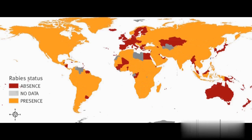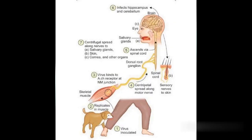Thereafter, the virus spreads to the periphery and salivary glands. From the view of diagnosis and therapeutic opportunities, we need to know that rabies does not cause cytotoxicity. Neuronal morphology and lifespan remain normal throughout the course of disease. Death occurs from global neurologic and organ dysfunction.